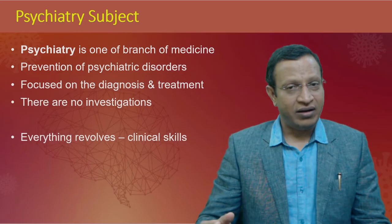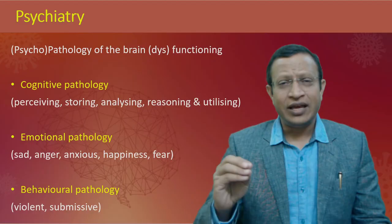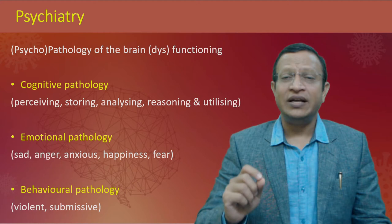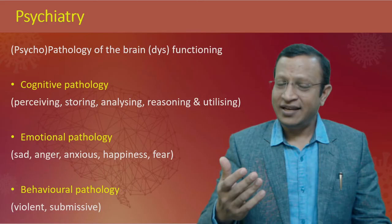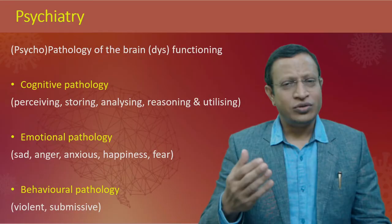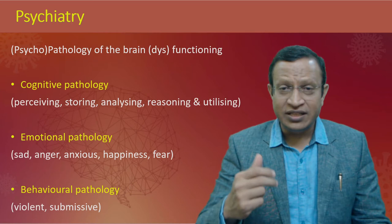Psychiatry is basically about psychopathology — pathology of the brain functioning, meaning there is some abnormality in brain function. The functions of the brain include cognition (perception, storing, analyzing, reasoning, and utilizing information), emotions (how we feel and react), and behavior. Any pathology in cognition, emotions, or behavior is what we call psychiatry — or so-called psychopathology.